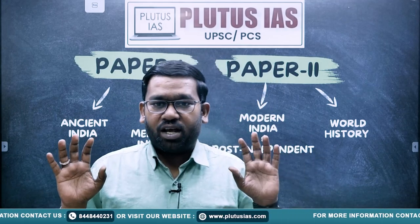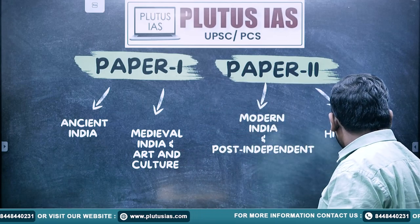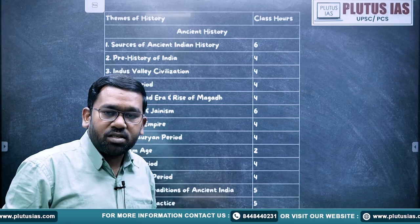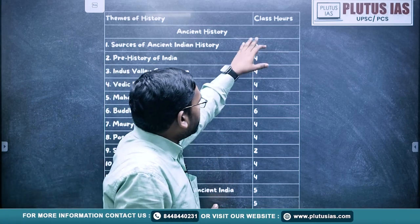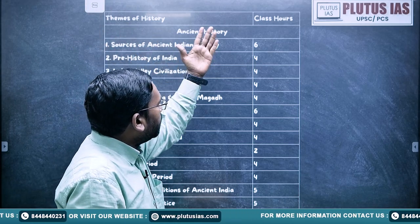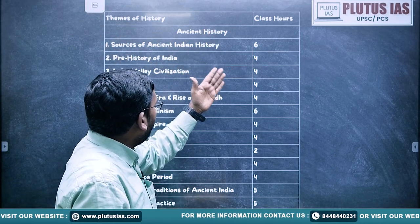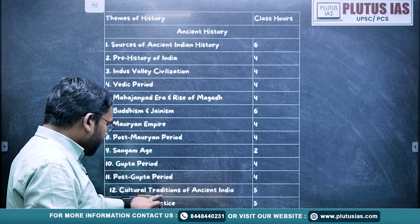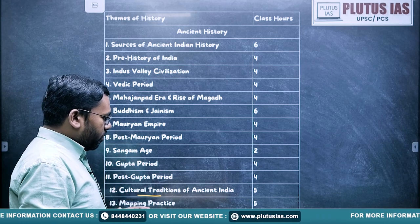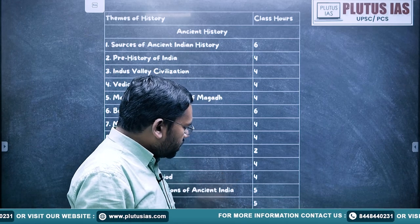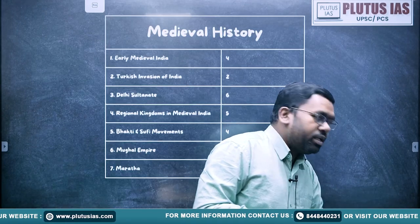Along with mapping sessions, the mapping should be covered as well. Let's look at the major topics. For Ancient India, we have a total of 13 chapters. The first chapter covers Sources of Ancient Indian History — about 6 hours; Prehistory — 4 hours; then the Vedic period and others. The last topic will be the Cultural Traditions of Ancient India and mapping practices, which also includes Art and Culture. In around 30 classes we are going to cover Ancient India.